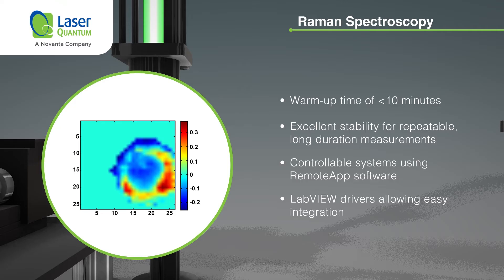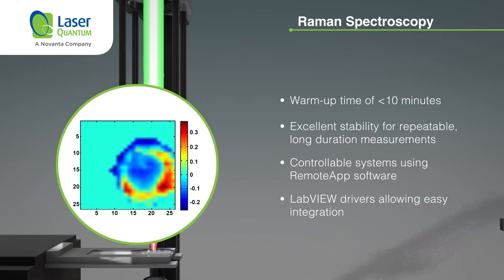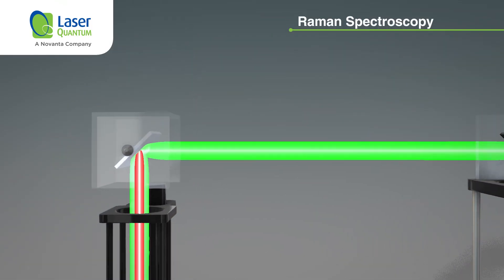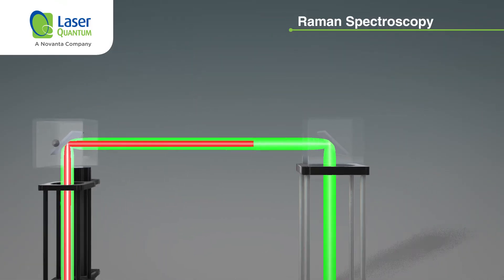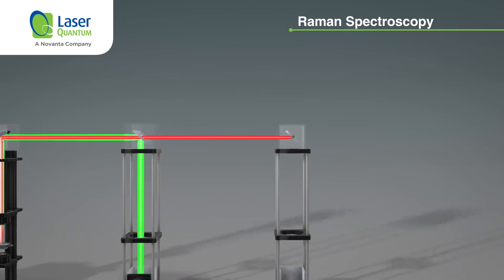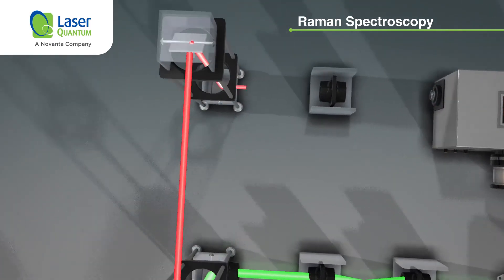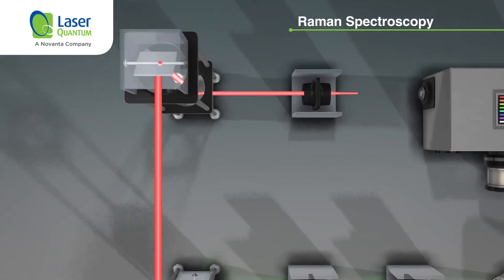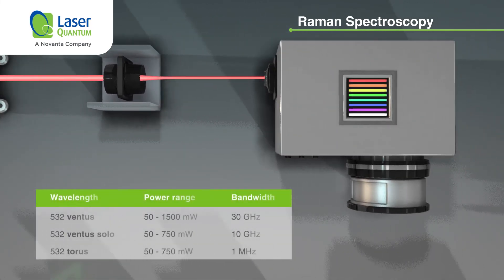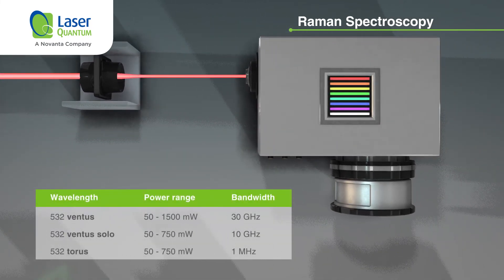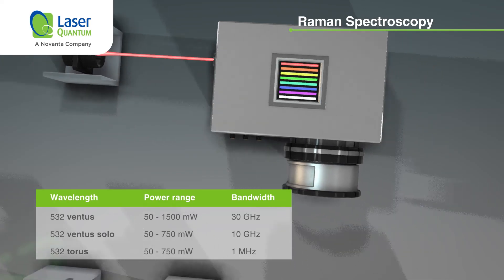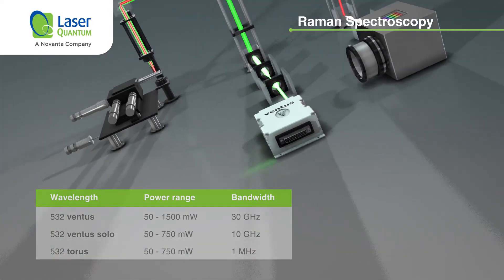For Raman mapping studies, excellent pointing stability across the range is ideal for free-space coupling to a microscope, with minimal drift over extended timescales. The 30 gigahertz bandwidth of the Ventus 532 is sufficient for the majority of Raman studies; however, in cases where greater resolution is required, the Ventus Solo and Torus offer narrower bandwidths.